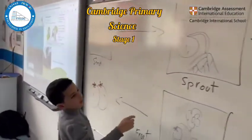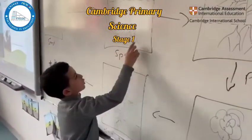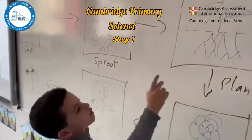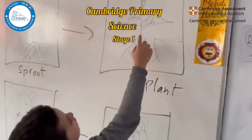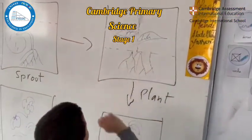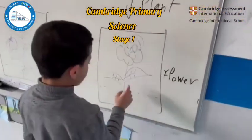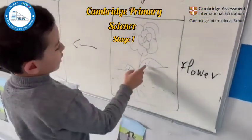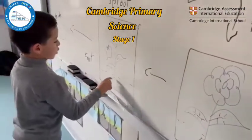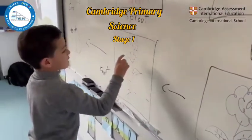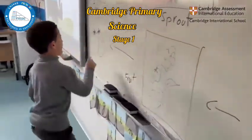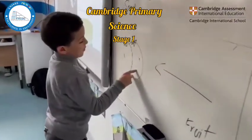Seeds, natural seeds and roots. Roots and leaves, roots and leaves and flower, roots and leaves and flower and fruit. And tomato.